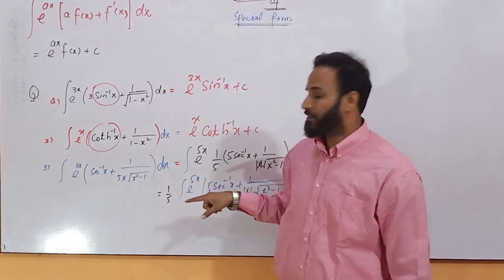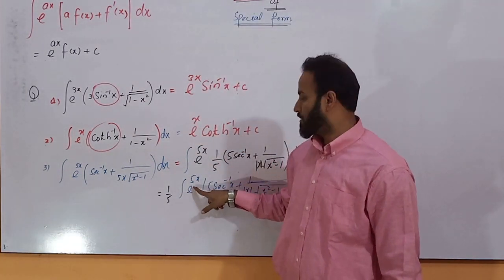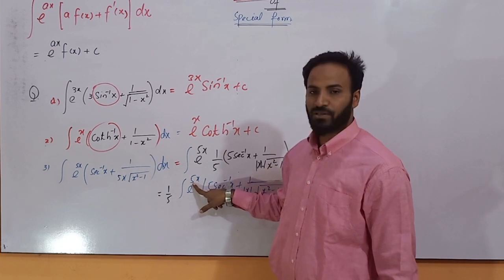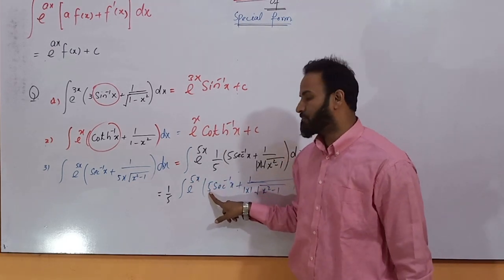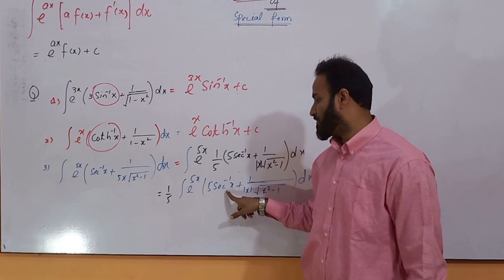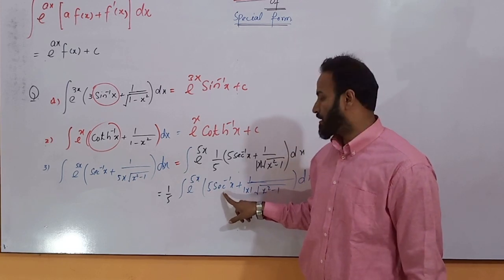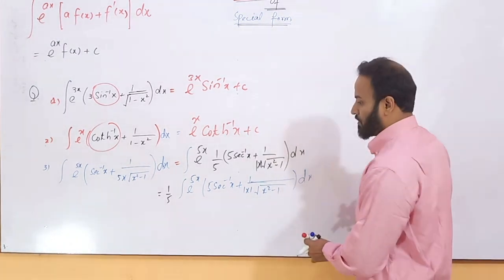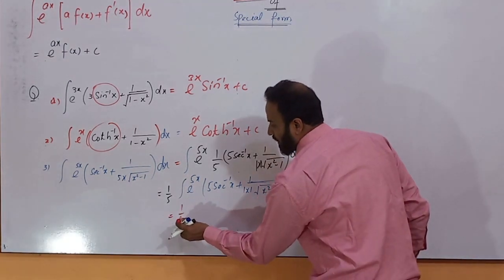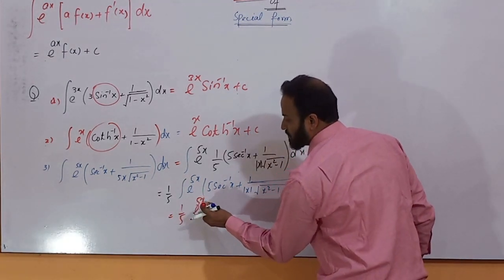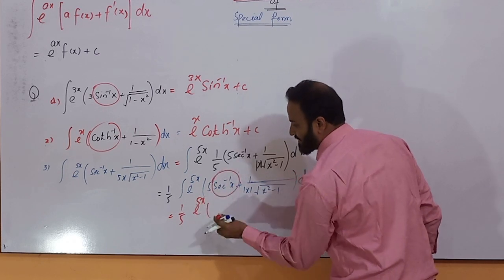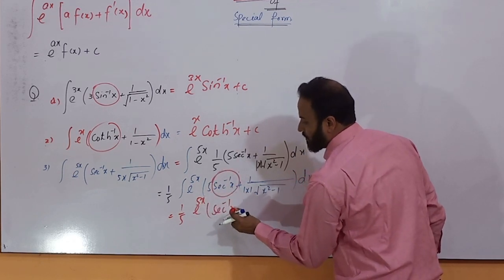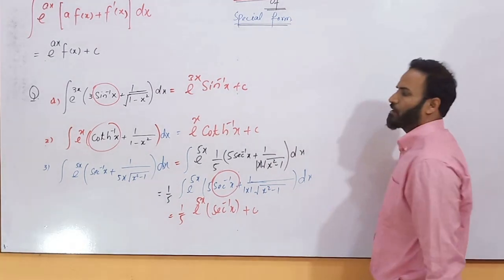1 over 5 is a constant quantity, it will be outside from the integration. So 1 over 5, the integration of e^5x, 5 secant inverse x plus 1 over x absolute x square minus 1, differential. According to the technique, here is exponential form. The constant term is 5, so same 5 available here with the function secant inverse x, and the derivative of secant inverse x is added here. So the final answer: 1 over 5 exponential, plus what is the function here? Secant inverse x plus c.